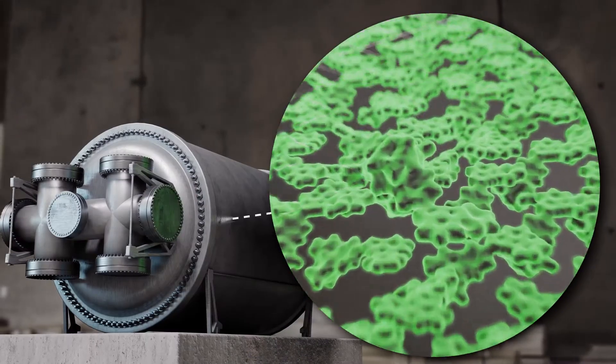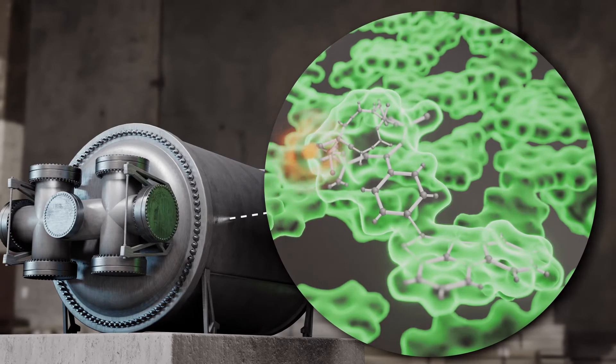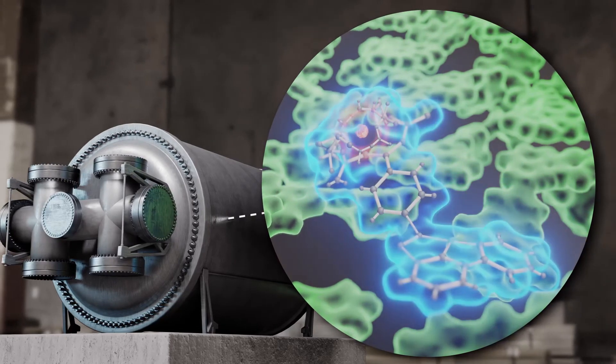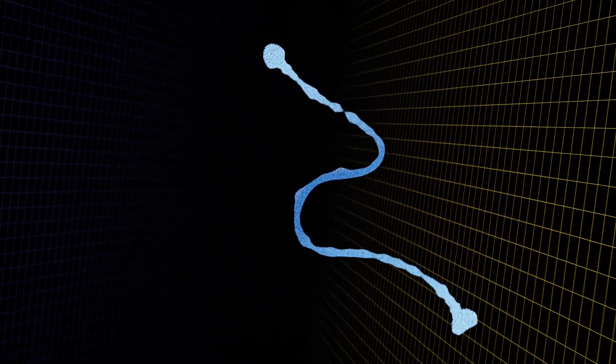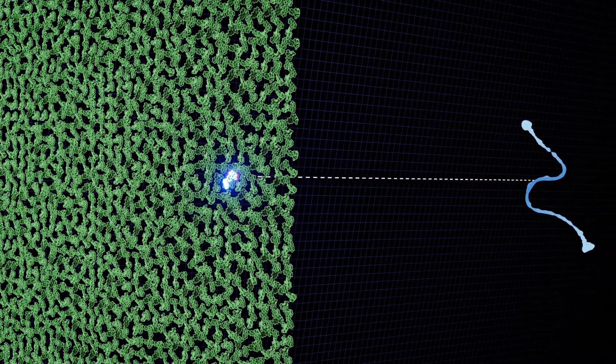A monolayer of these molecules inside the NEXT xenon chamber will capture the barium ion and shine blue light. At the same time, the two electrons emitted will be detected, proving the occurrence of the neutrino-less double beta decay.